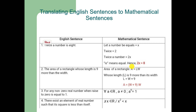For any non-zero real number raised to the power 0, the result is equal to 1. So, for all A in the real set where A ≠ 0, A raised to the power 0 equals 1. Another English sentence is: there exists an element of the real numbers such that its square is less than itself. Mathematically, there exists x in the real numbers such that x² is less than x.